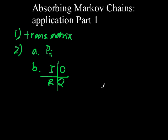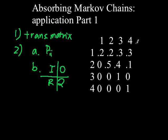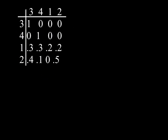To do so, first find all of the absorbing states. Let's say you have the matrix here, where these are row numbers and column numbers. There are absorbing states at certain positions. Once you find the absorbing states, rewrite the row and column order of the matrix with those absorbing states first. The order of those states does not matter, neither does the order of the remaining rows and columns.